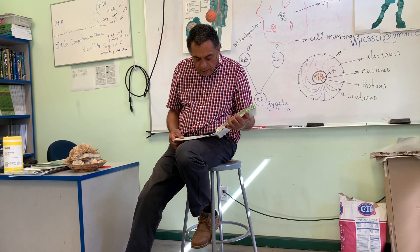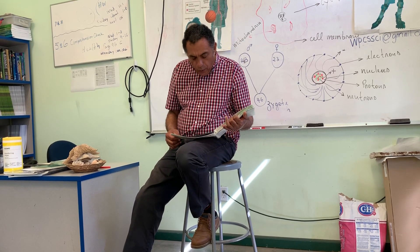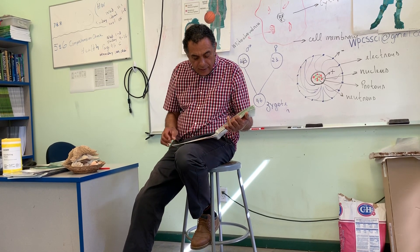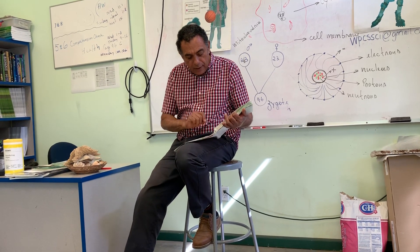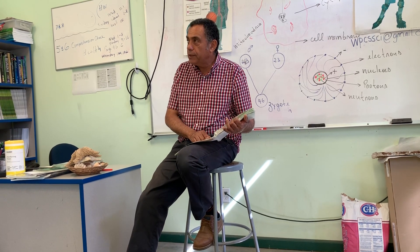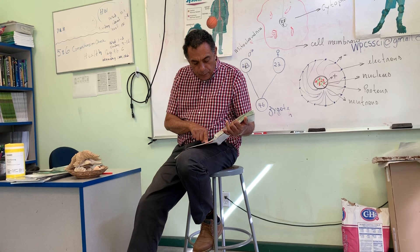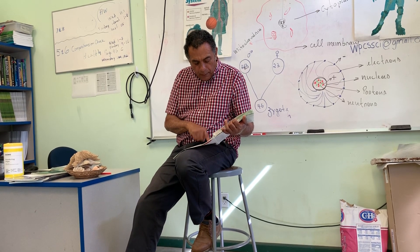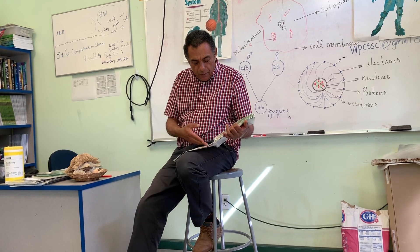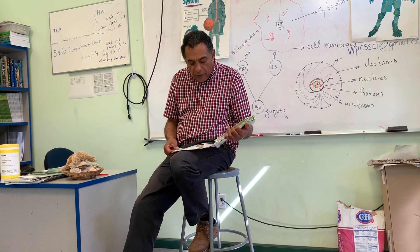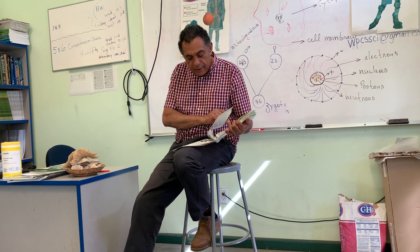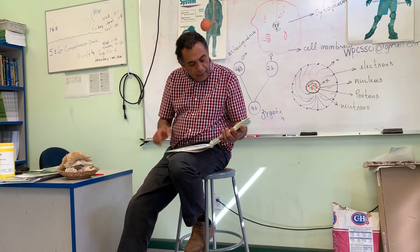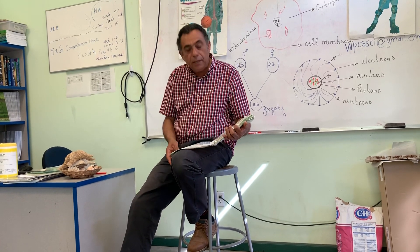Now on page 295 we look at non-metals. We start with bromine — bromine is a liquid. Then hydrogen, which is very flammable, but when you mix it with oxygen you make water. We'll continue with non-metals next class. For today we stop here, but keep reading to become familiar with the periodic table.